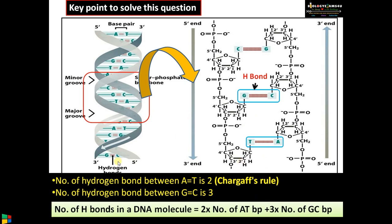So we can have an equation like this. Number of hydrogen bonds in a DNA molecule is equal to 2 times the number of AT base pairs plus 3 times the number of GC base pairs. Here 2 is the number of hydrogen bonds between A and T, whereas 3 represents the number of hydrogen bonds between G and C. Let us work out some problems.